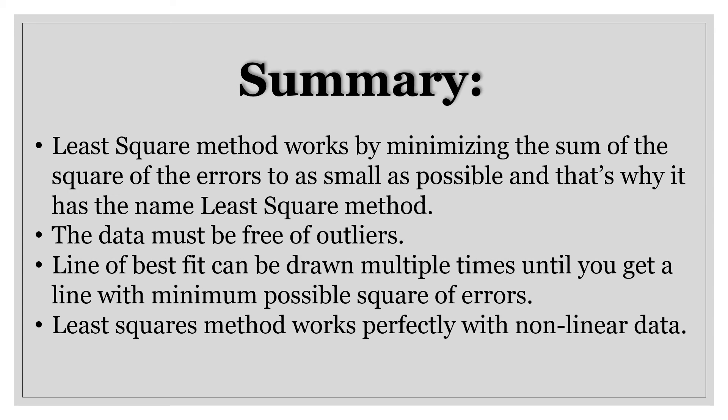Let's summarize what we've learned in least square method. Least square method works by minimizing the sum of squares of the errors to as small as possible, and that is why it is named as least square method. The data must be free of outliers — outliers are the points that deviate significantly from the rest of the data points, and they can be caused by measurement or execution error. Line of best fit can be drawn multiple times until you get a line with minimum possible square of errors. Least square method works perfectly with non-linear data as well.